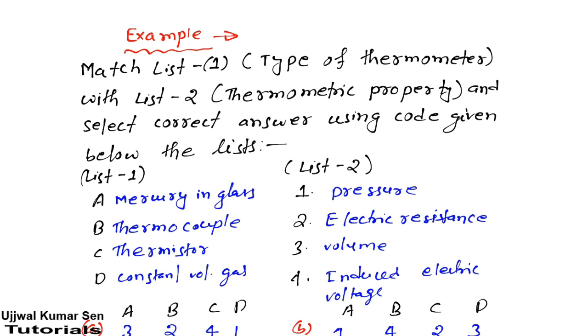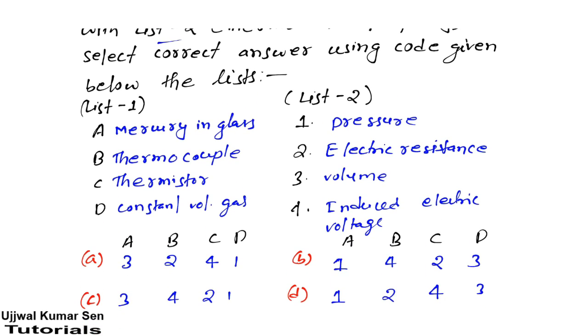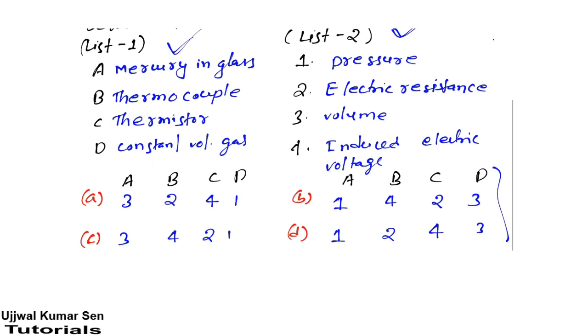You're seeing right now this question already asked in ESC previous year. This is a matching question. This is List 1 and this is List 2. They have given four options - usually they give four options together like A, B, C, D. You will find them here and here. I've arranged this for your understanding.